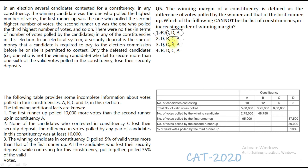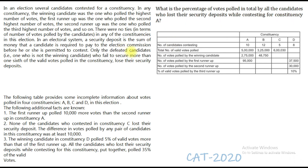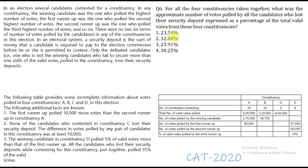Question 6: What was the approximate number of votes polled by all candidates who lost their security deposit across all four constituencies, expressed as a percentage of the total valid votes? Using the complete data for all four constituencies, the answer comes out to approximately 23.9%. There are two options in the range of 23, so you need to solve it completely. The answer is the third option. This set was of moderate difficulty, but at least three to four questions out of six were doable.